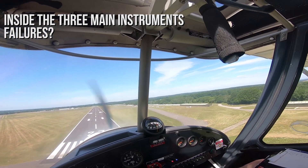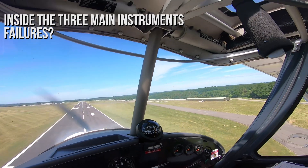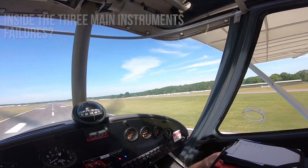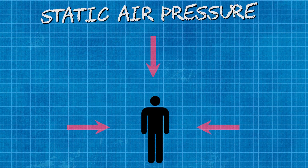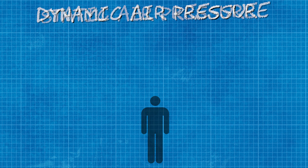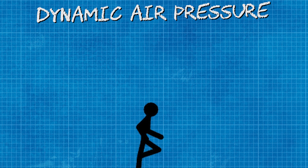Without further ado, we're going to look at the difference between static air pressure and dynamic air pressure. If you are standing still, air will be pressing against you equally in all directions. This pressure pushing against you will be static. However, if you start to run, the air pressing against your face will be dynamic air pressure as you are a moving body.